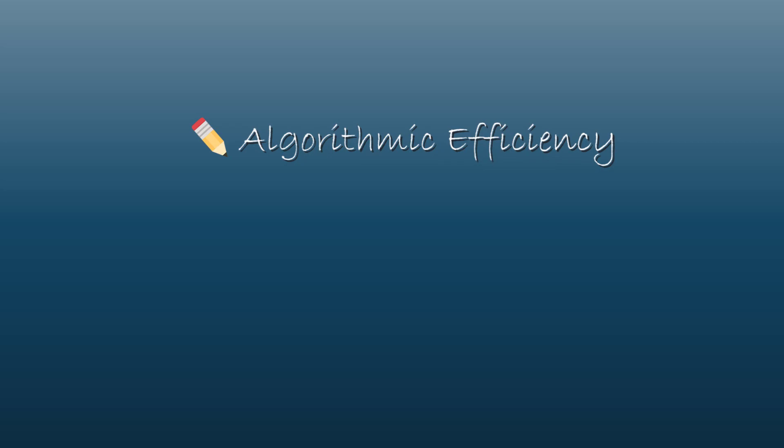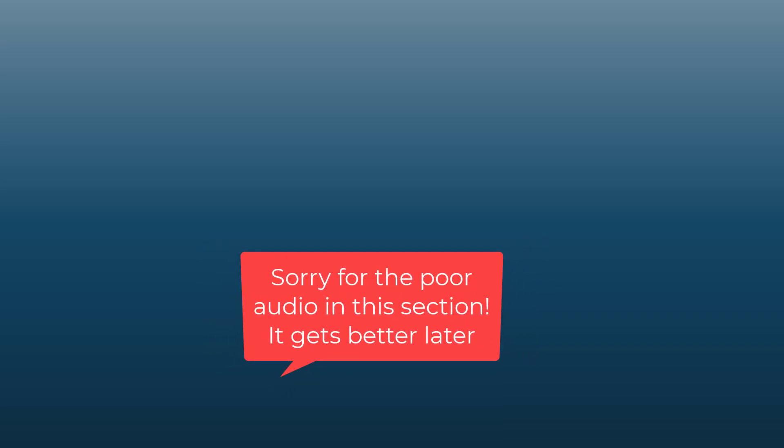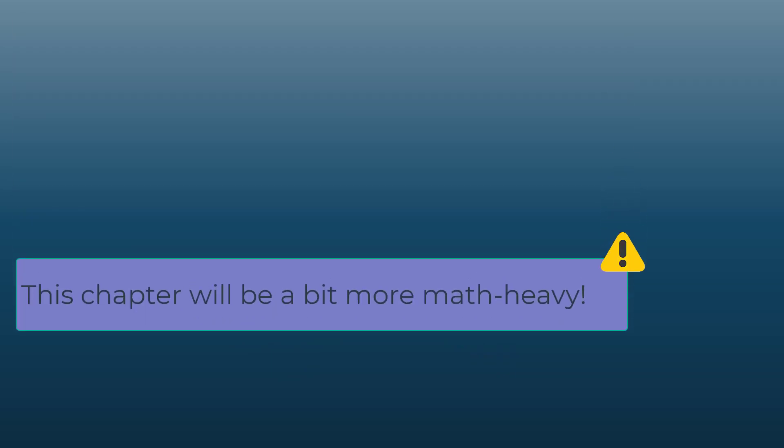This video covers probably the most challenging topic in AP Computer Science Principles: algorithmic efficiency and undecidable problems. I'm going to cover both of these together since they're related topics, and it will be a slightly longer video because I'll start by going over a bit of the math relevant to algorithmic efficiency.